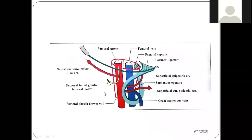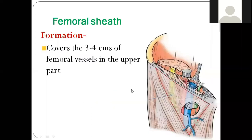Anybody remembers the boundaries of the femoral triangle? The base is formed by the inguinal ligament. The medial border is formed by the adductor longus muscle. Lateral border by sartorius. The apex is the meeting point of sartorius and adductor longus. Very good.